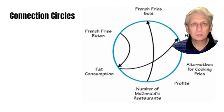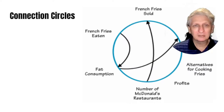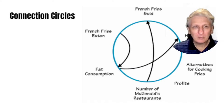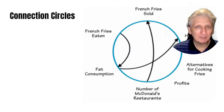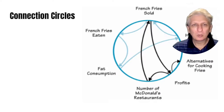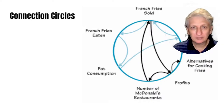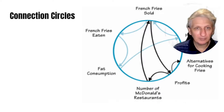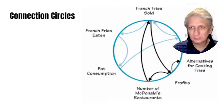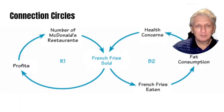Another simpler approach is the connection circle. To create a connection circle, we put all significant factors around the outside of a circle and draw lines between those factors indicating whether they have an effect. For example, fat consumption can affect health risk concerns; the number of McDonald's restaurants affects the number of french fries sold. We then develop loops: more McDonald's restaurants leads to more french fries sold, which increases profits, which leads to more McDonald's restaurants — a reinforcing loop.